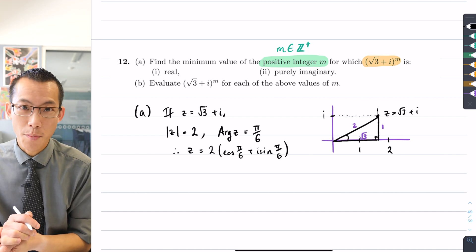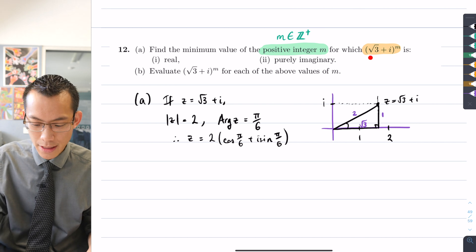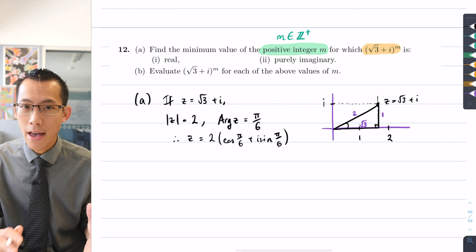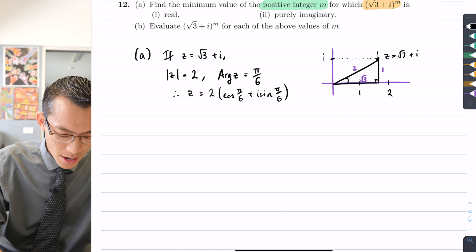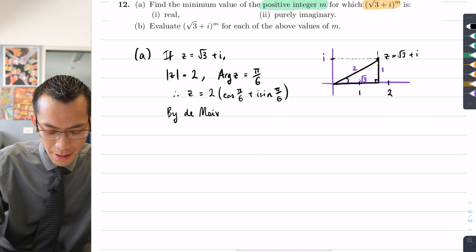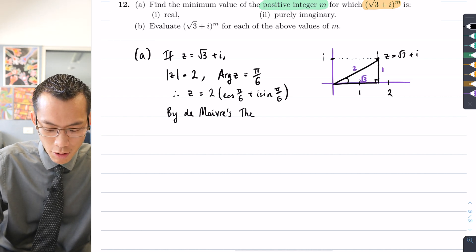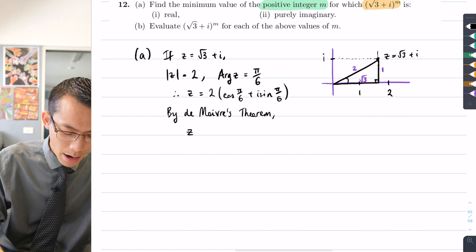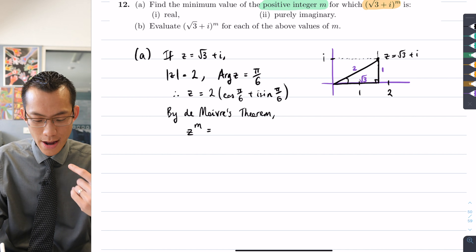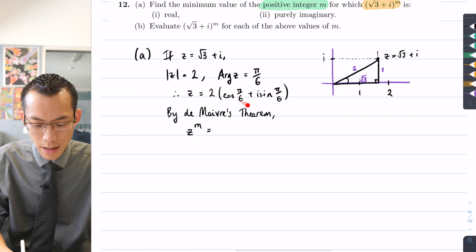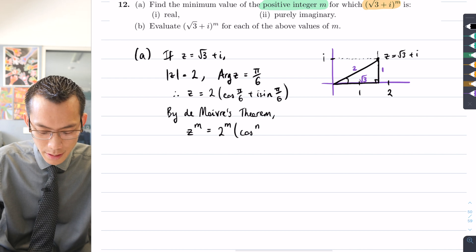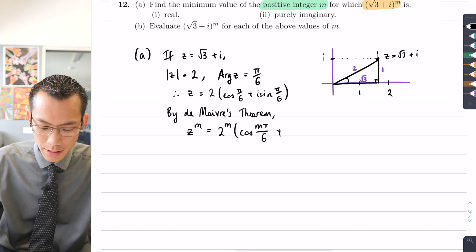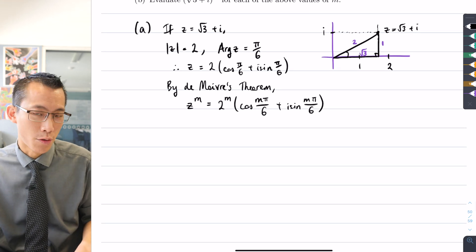I've converted into polar form, and that allows me to use De Moivre's theorem to take this complex number raised to the power m and write it in a simpler way. By De Moivre's theorem, z^m = 2^m(cos(mπ/6) + i sin(mπ/6)). This is just the straight-out use of De Moivre's theorem.